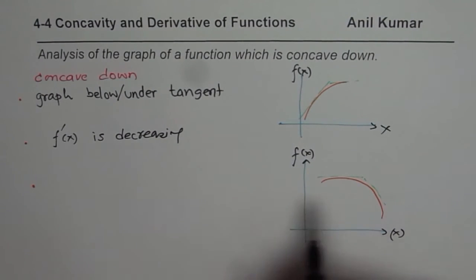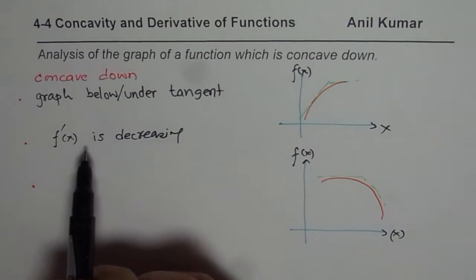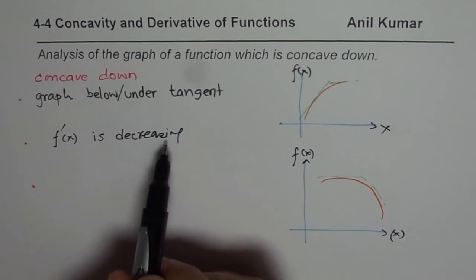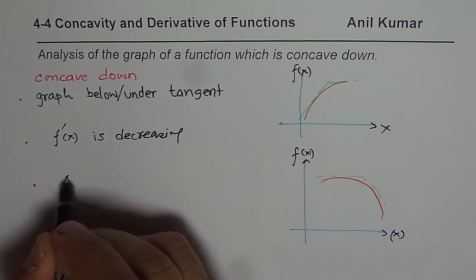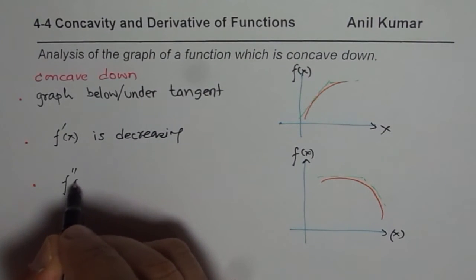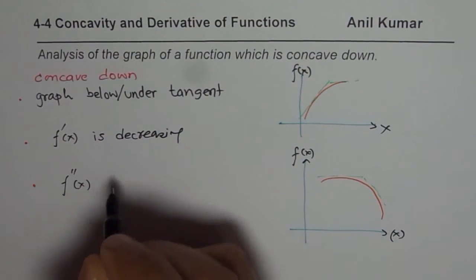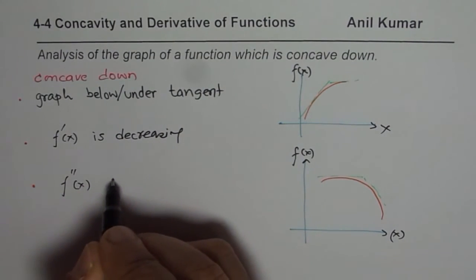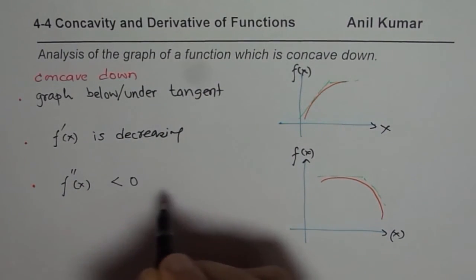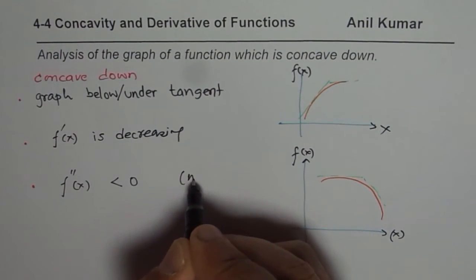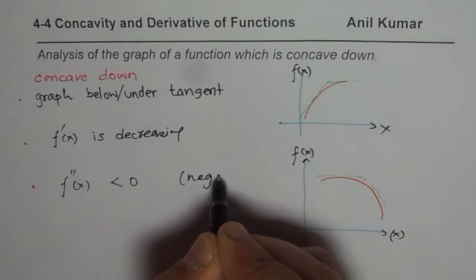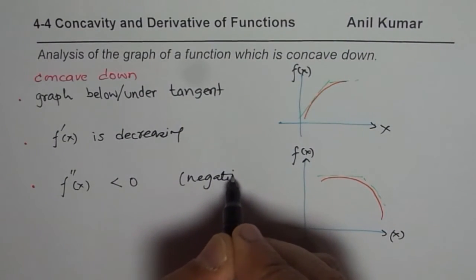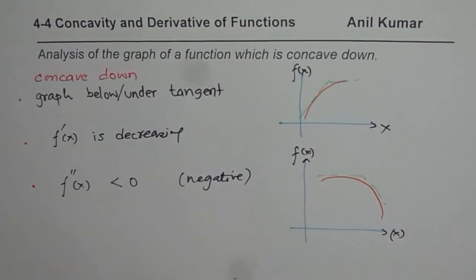So f'(x) is decreasing. The second thing you notice is that since the derivative is always decreasing, the second derivative will be negative — less than zero. These are the characteristics associated with a concave down graph.